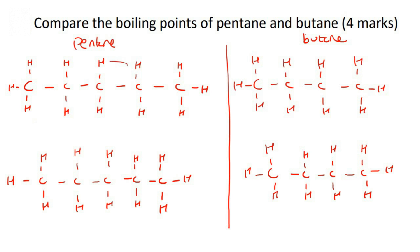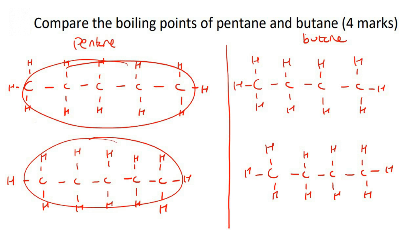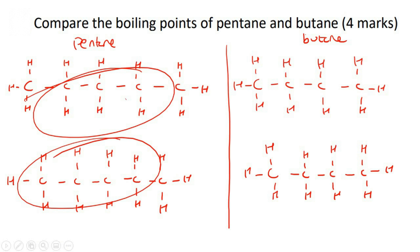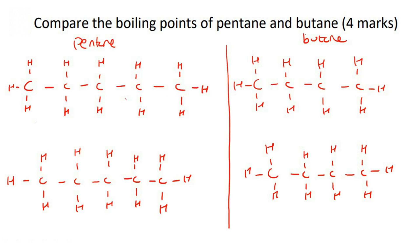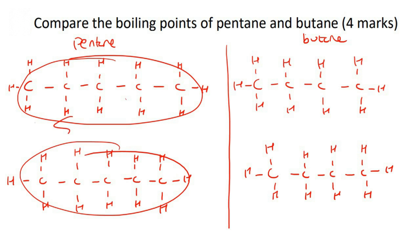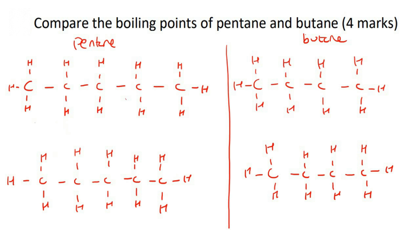To boil something means you are turning a liquid into a gas — separating the liquid molecules from each other. So if you wanted to separate the pentane molecules, you are going to need more energy than to separate the butane molecules. This means you would need a higher temperature, because temperature is energy. So pentane requires a higher temperature to boil than butane.